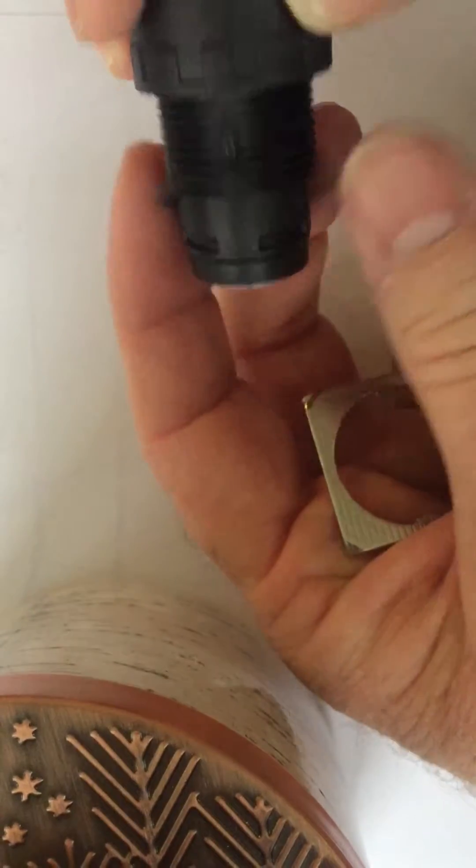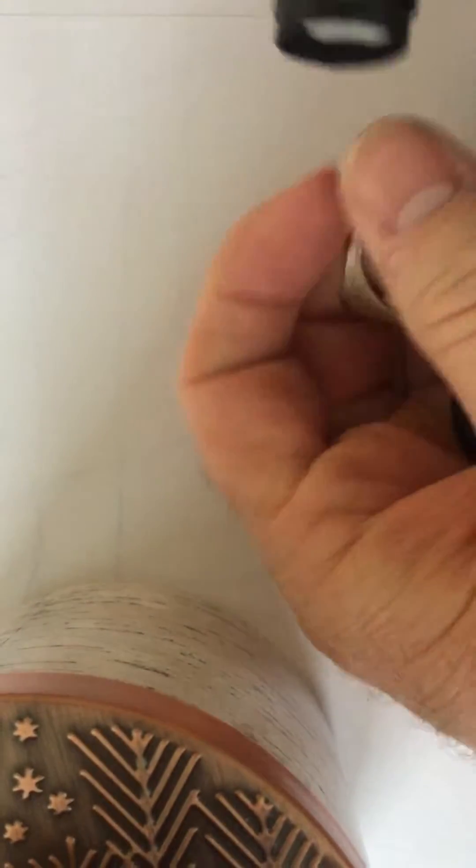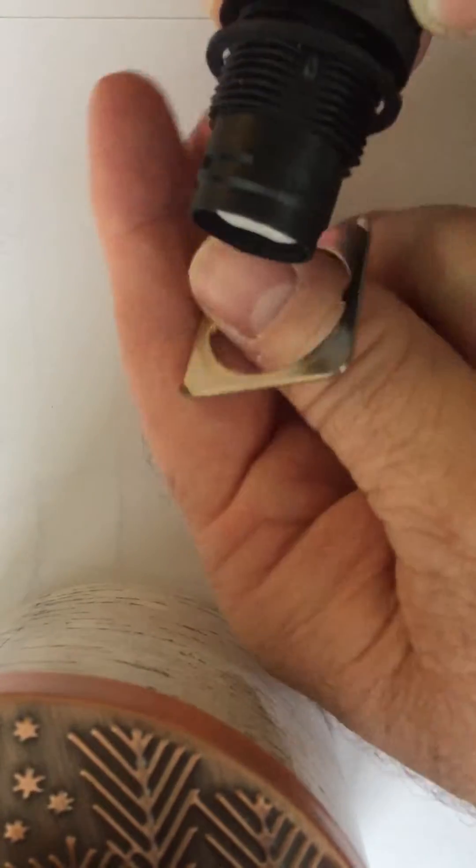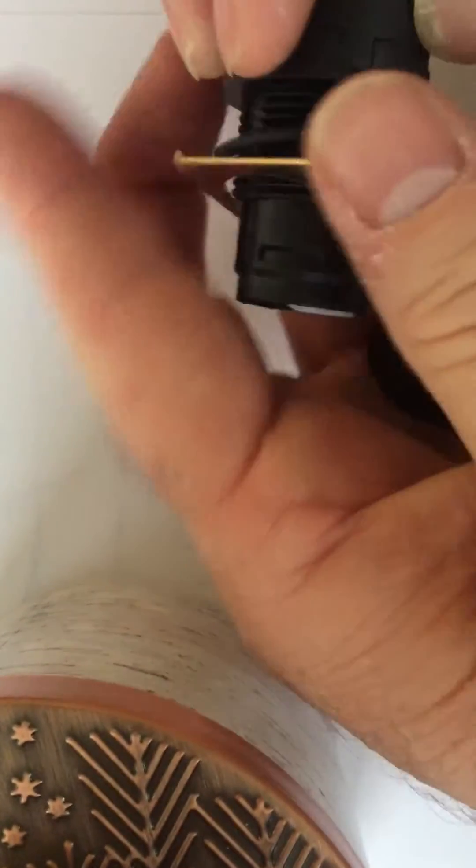You put the rubber gasket on here like this. You put it through the frame of the machine. You put this on the inside of the machine so this will hold it in place.